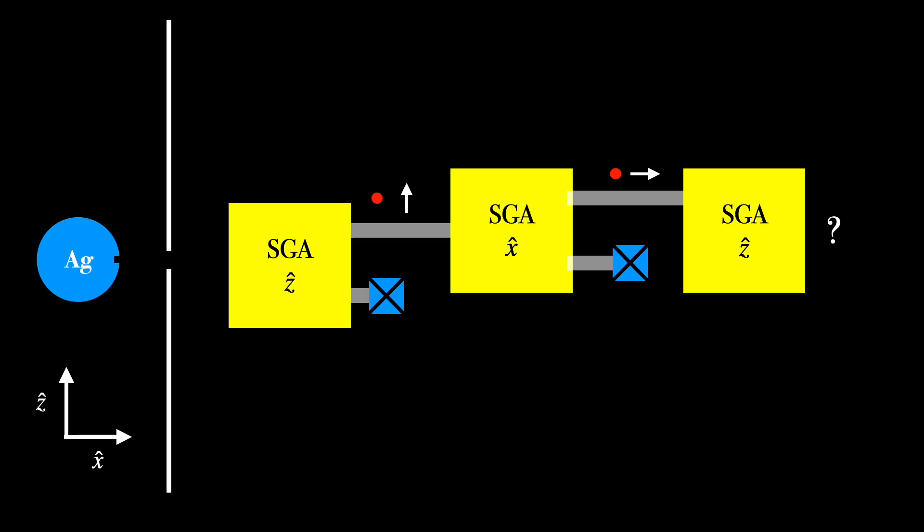And at this stage, if all we've done is simply observe the properties of being z up and x up that these atoms have, then we might expect to see 100% z up come out here. But that is not the case. Amazingly, we get a 50-50 split again. 50% z up and 50% z down. How could this be possible and what conclusions should we draw from these results?